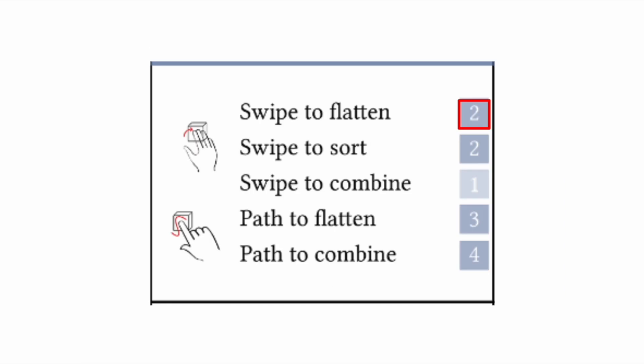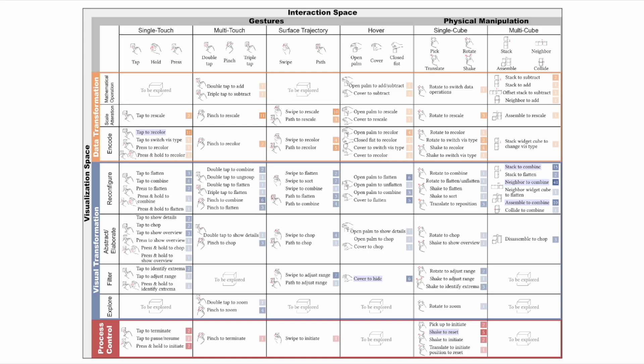For each interaction visualization pairing, multiple mapping combinations were listed. The frequency of the specific mapping is indicated by a color-coded square box. The number within the box represents the frequency it was proposed during the workshop. This design space can therefore act as a dictionary-like tool for creating and inspiring tangible cube visualization designs.